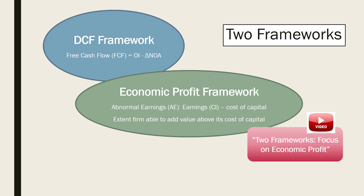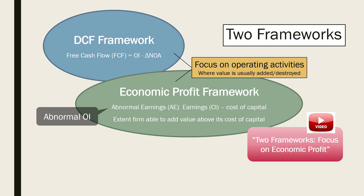Within the economic profit framework, if we think a firm cannot add value from its financing activities, we can focus on abnormal operating income rather than abnormal earnings. We can use both frameworks to focus on operating activities, where value is usually added or destroyed in business. We will spend a lot of time in our unit focusing on the economic profit framework, and we will use both the DCF and economic profit models or frameworks to value our firms.